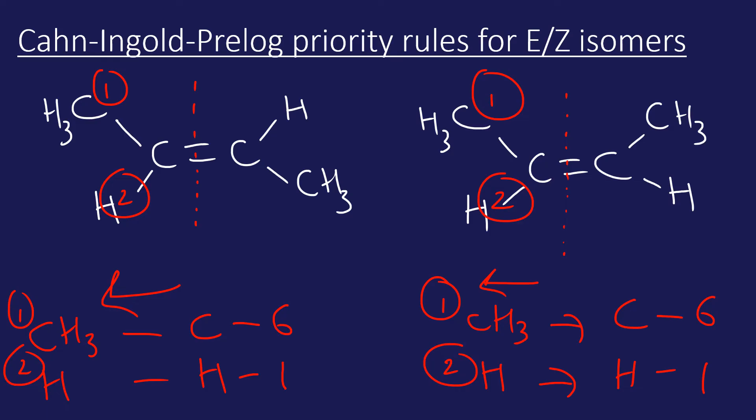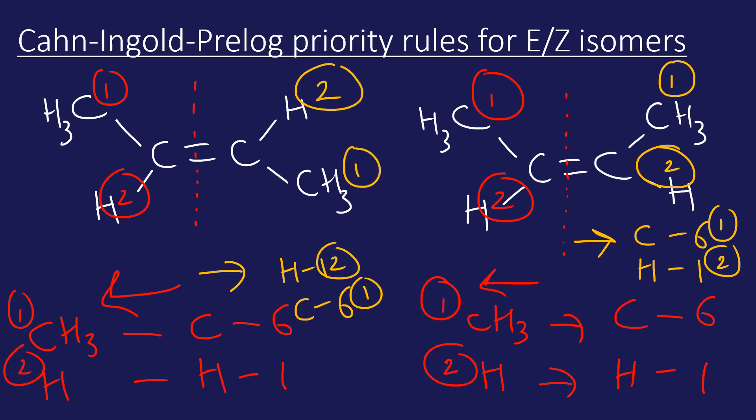Now we're going to go through the same reasoning, but this time I'm going to look at the right-hand side. We've got carbon and hydrogen. This is atomic number six; this is atomic number one. Six wins—that's the highest, so the highest priority is there, second priority is there. I'll apply the same logic here: we've got hydrogen, which is one, and carbon, atomic number six. Six is higher than one, so the number one priority is here, second priority is here.